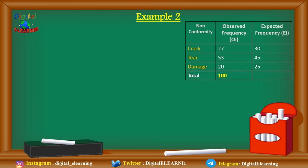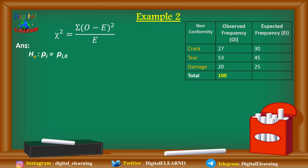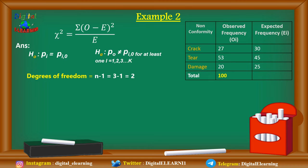In the second example, we have non-conformity data: crack = 27, tear = 53, damage = 20, totaling 100. The expected frequencies are: crack = 30, tear = 45, damage = 25. We apply the same chi-square formula and state the null and alternate hypotheses. Since there are three variables, the degree of freedom is n − 1 = 3 − 1 = 2.